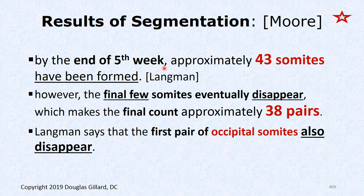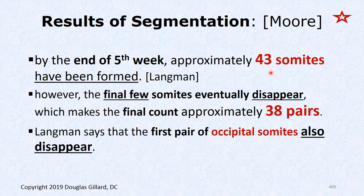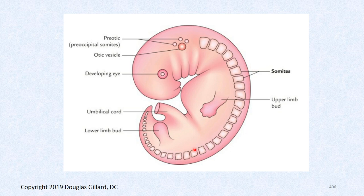By the end of week five, you'll get about 42 to 44 somites — on average about 43. Some somites actually disappear after formation, especially in the coccygeal region. Langman says one of the occipital somites also disappears, though that wasn't confirmed by other authors. The final number you're left with is about 38 pairs — anywhere from 37 to 39, but we'll use 38 for testing purposes.